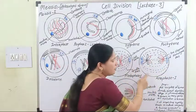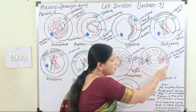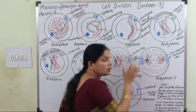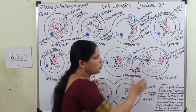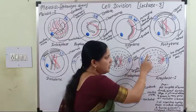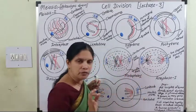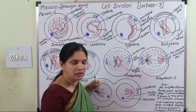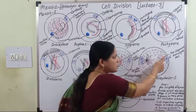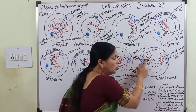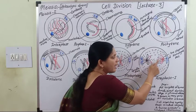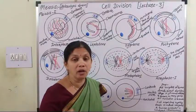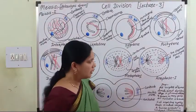One chromosome is pulled toward one pole, and the homologous chromosome is pulled toward the other pole. In this way, half the number of chromosomes move to each pole. In anaphase I, three types of spindle fibers are observed: continuous spindle fibers, chromosomal spindle fibers, and interchromosomal spindle fibers.